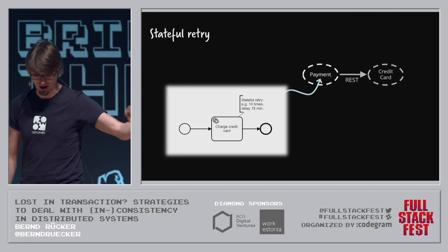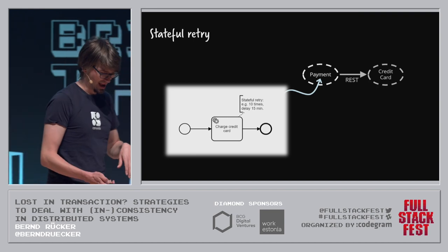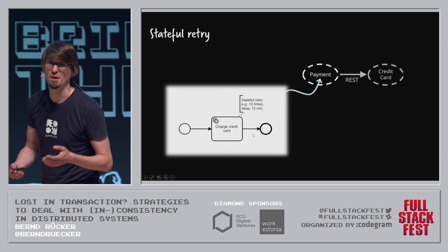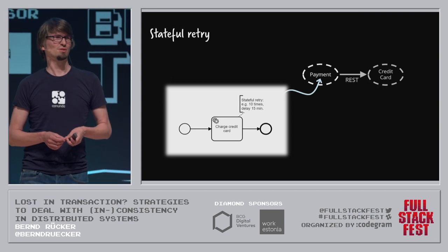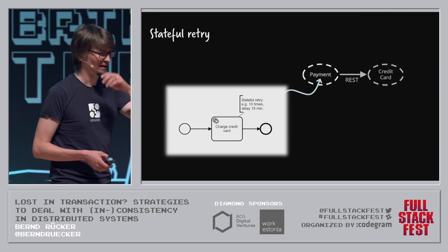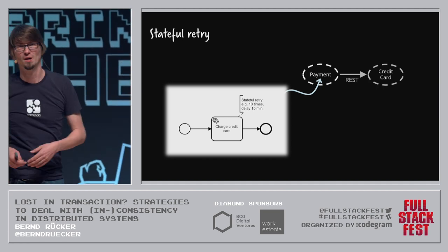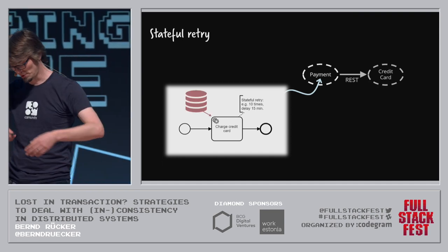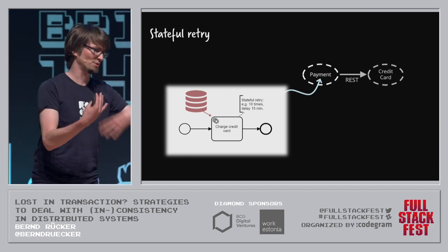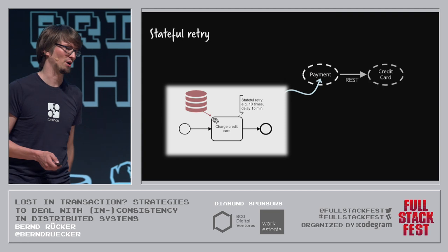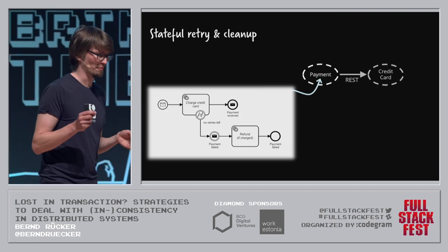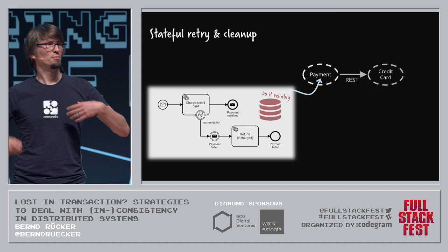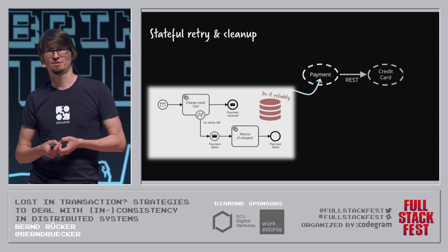Let's say you have a payment, and the payment could do something like charge the credit card with stateful retry. This notation is called BPMN — it's an ISO standard for modeling workflows. The workflow is stateful, saved in a data store, and can retry for hours, days, or weeks. You can also define: if there are no retries left, refund the payment. And again, this will be stateful so you can retry it for ages even if the server is not available.